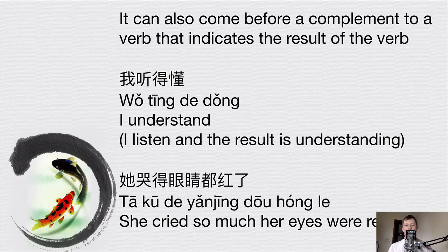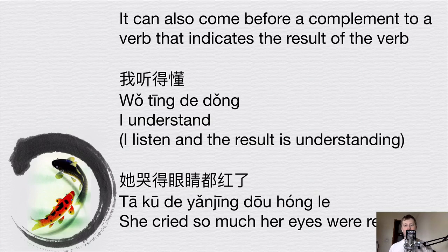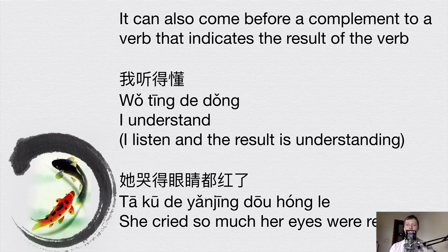Another example: 她哭得眼睛都红了 — she cried so much that her eyes were red. Breaking it down: 她 is 'she,' 哭 is 'cry,' 得 indicates the result of this verb, 眼睛 is 'eyes,' 都 means 'completely' or 'all,' 红 is 'red,' and 了 is a grammatical particle indicating a change in situation. So this is 得 used to express the result of a verb.